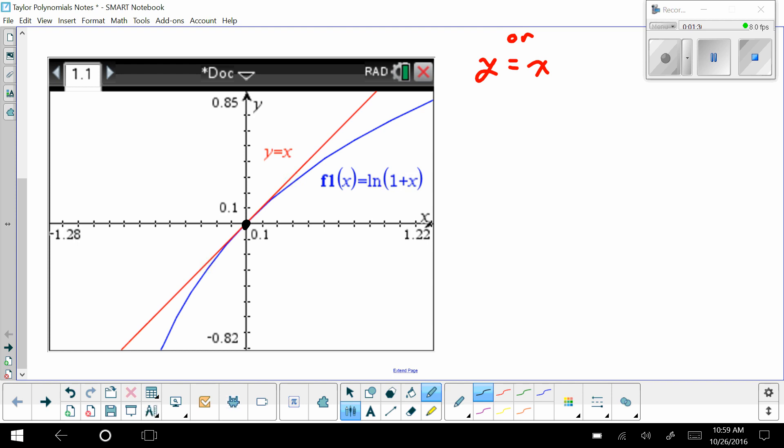And this can be an advantage to us because then this means we could actually use the tangent to make estimates of function values. So for example, let's say I wanted to know f of 0.1. In other words, I want to know what the natural log of 1.1 is. Well, I don't know the natural log of 1.1 off the top of my head. However, what I can notice is that at 0.1, my tangent is very close to my function. So I may not know what this is exactly, but I can estimate it using my tangent, which say this is about 0.1. And this is really useful for us because plugging things into linear equations is much easier than plugging things into logarithms.